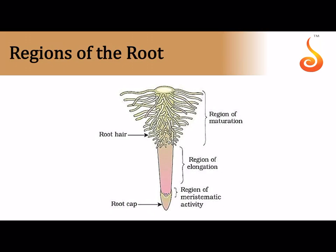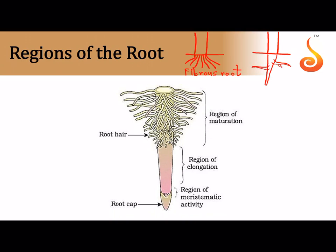In the fibrous root system, the main axis dies out and bundles of roots develop from the base of the stem. In contrast, in the tap root system there is a well-organized main axis (primary root) that develops from the radicle, with secondary roots branching from it, and tertiary roots branching from those. This organized root system is called the tap root system, as opposed to the adventitious fibrous root system.